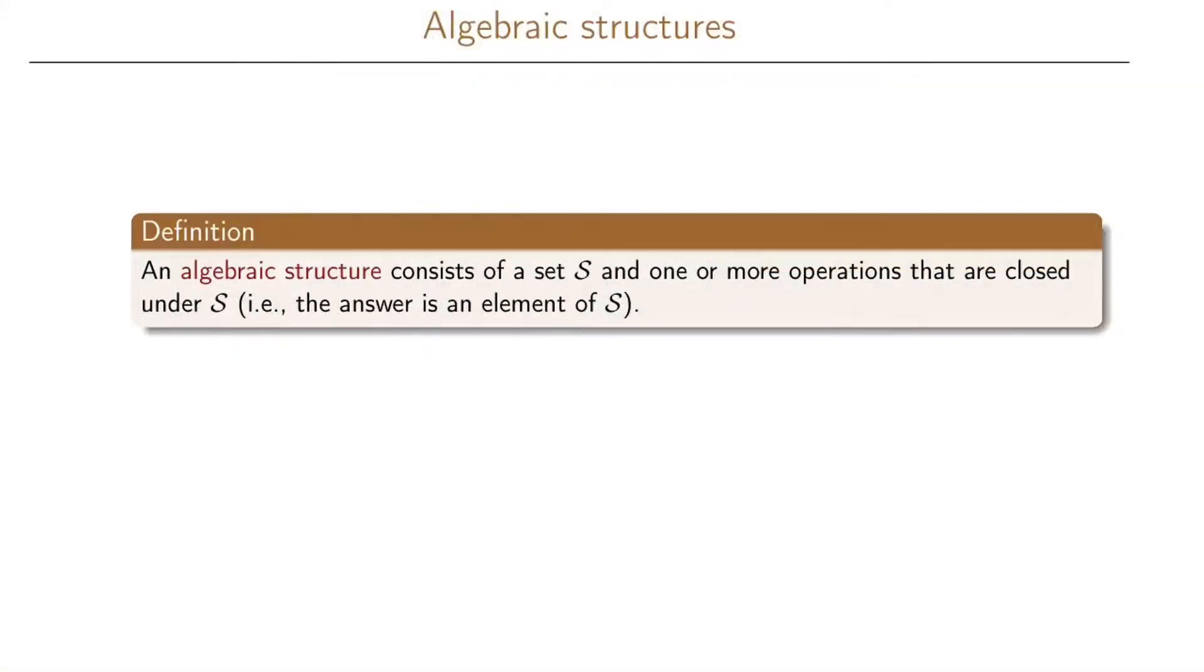Now we are ready to start talking about algebraic systems or algebraic structures. The definition of an algebraic structure is that the structure consists of a set S and one or more operations that are closed under S. Being closed under S means that the answer when we do operations on the elements will also end up in the set S.